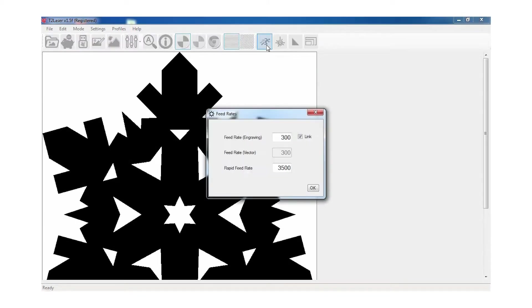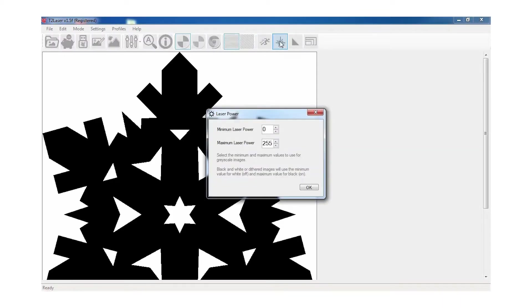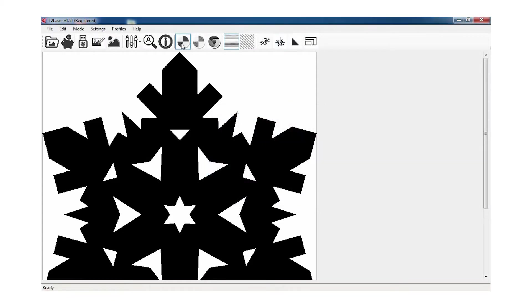I'm going to set the speed on my 2.5 watt diode laser to 300, and I'm going to set the power to full, which in T2 Laser is set with 255. I'm going to make sure the setting is set to black and white.